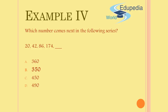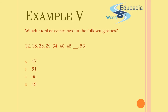Let's look at one more number series example: which comes next in 12, 18, 23, 29, 34, 40, 45, blank? These are not squares, cubes, or a geometric progression. Let's notice the gaps: 12 to 18 is 6, 18 to 23 is 5, 23 to 29 is 6, 29 to 34 is 5, 34 to 40 is 6, 40 to 45 is 5. The gaps alternate between 6 and 5. Since the last gap was 5, the next gap should be 6. So 45 plus 6 gives 51, which is the answer.